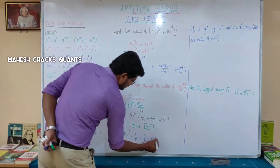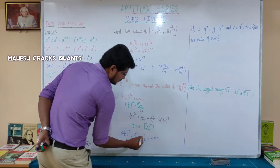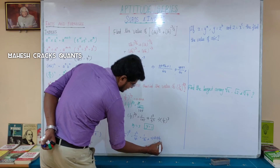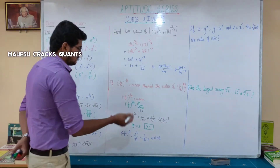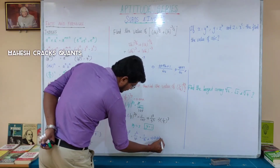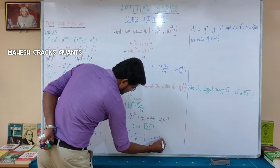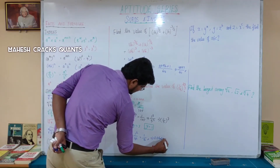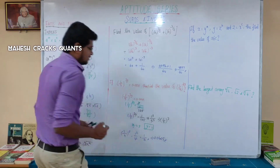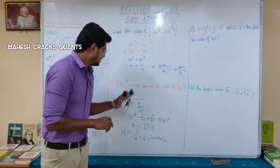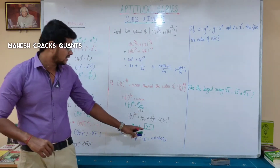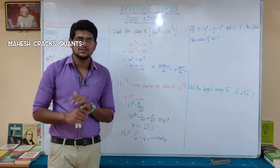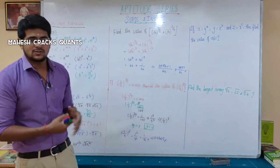1 by 16 as a decimal: dividing 1 by 16 gives 0.0625. So the answer is 0.0625 — or simply 1 by 16. Done. Next question.